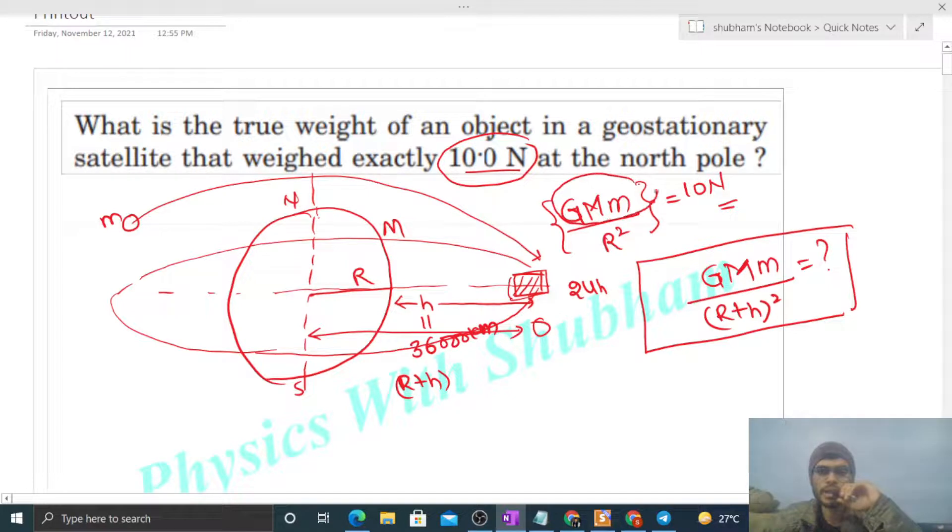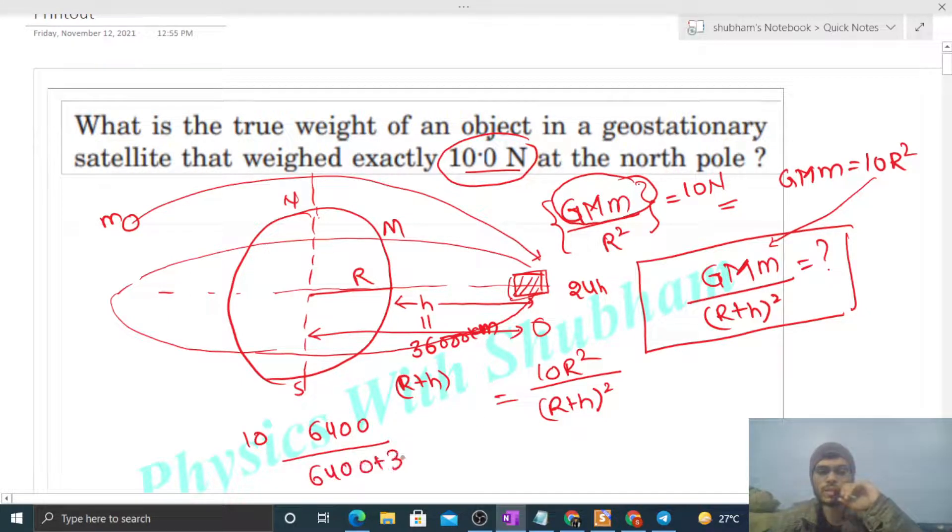So we can find out capital G capital M small m will be 10 times R square. Just put it here. So this becomes 10 R square divided by (R plus h) square. And R, the radius of Earth, is 6400 kilometers, and (R plus h) square is 6400 plus 36,000. This way we put the values in kilometers because it's a ratio, so the unit stays the same. This will be the true weight.